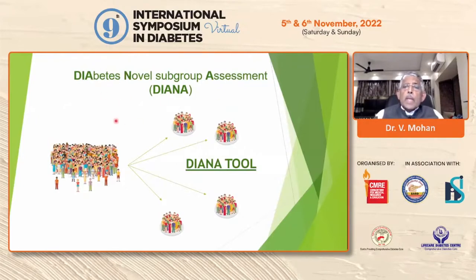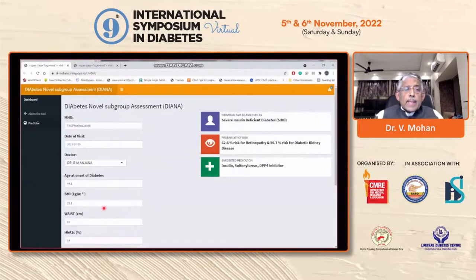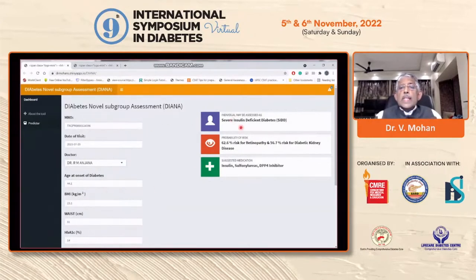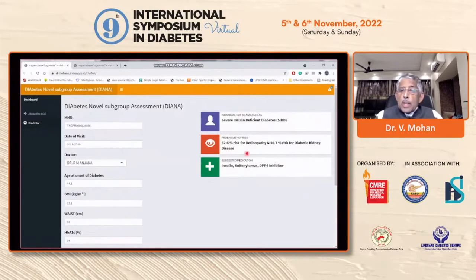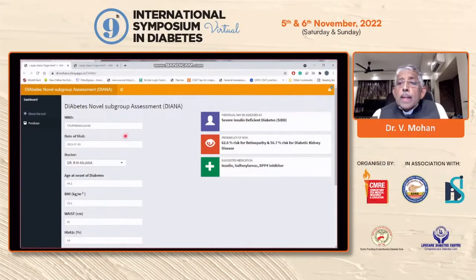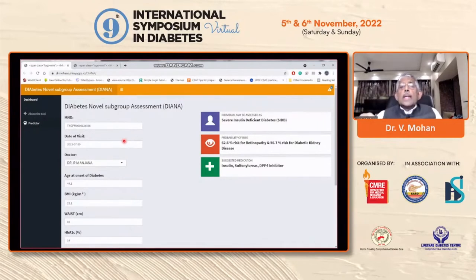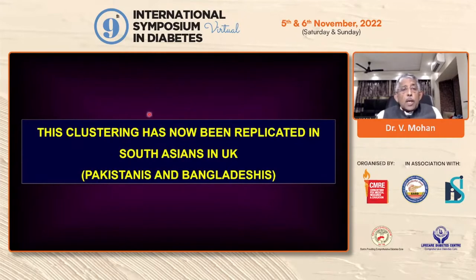To detect this in a clinic, we have now developed software called DIANA — Diabetes Novel Subgroup Assessment. You simply input the age, BMI, waist, C-peptide if available, HDL, and triglycerides. Within a second the software tells you which type of diabetes you are treating in that particular patient. In this case it identified SIDD, gives you the five-year risk of developing retinopathy and nephropathy, and also suggests that you consider a low-dose sulfonylurea, a DPP4 inhibitor, or insulin if HbA1c is very high. To my knowledge, this is the first time that clustering of type 2 diabetes using a simple program has been developed anywhere in the world.